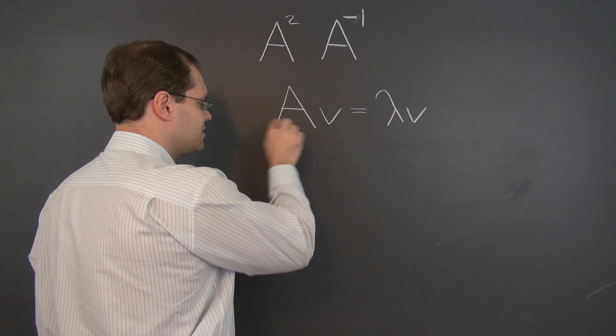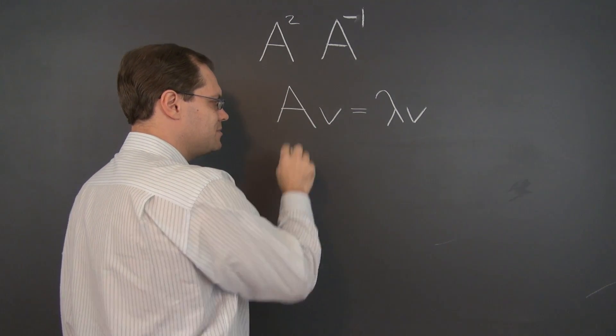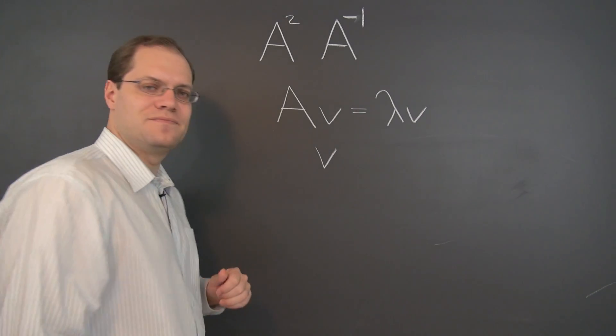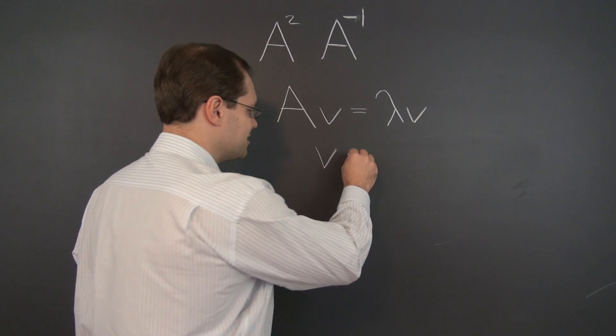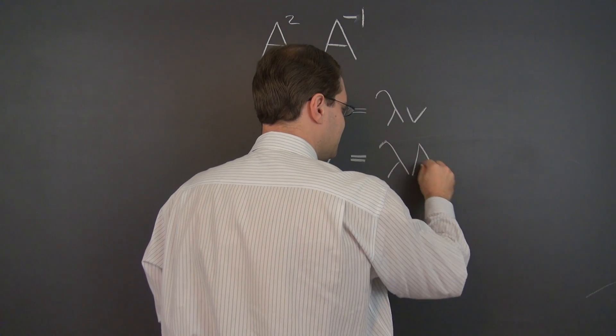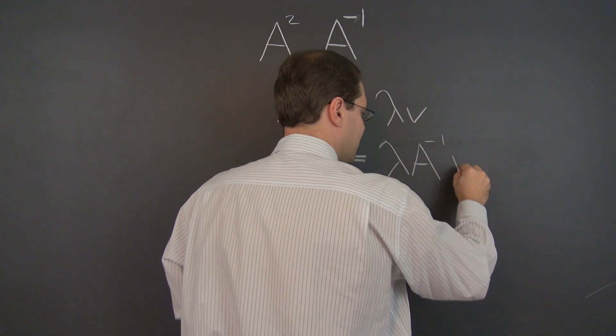well, A inverse times A is, of course, identity, and identity times V is V, so on the left-hand side we just have V. Let's see what we have on the right-hand side. On the right-hand side we have, similar to the previous case, lambda times A inverse V.